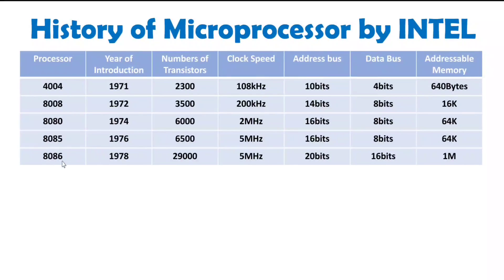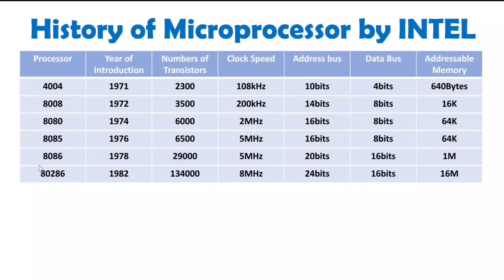After 8086, there was the 80186 processor, but it did not have the expected impact, so it is not listed here. After 80186, the 80286 was introduced in 1982 with 134,000 transistors and a clock speed of 8 megahertz. The address bus was 24 bits and the data bus was 16 bits. With a 24-bit address bus, it could interface 16MB of memory.